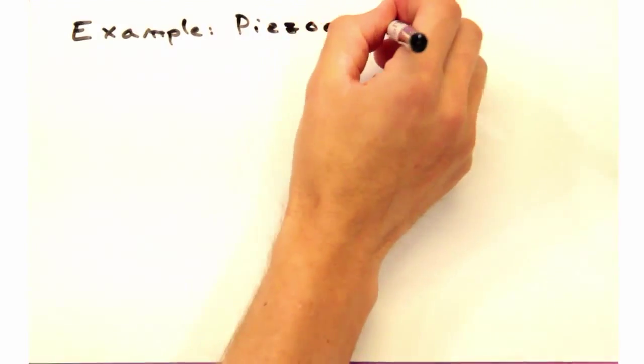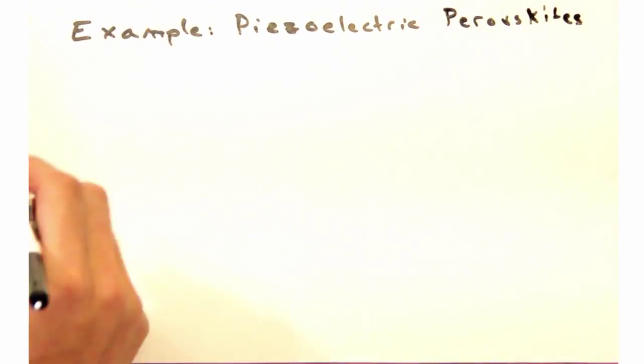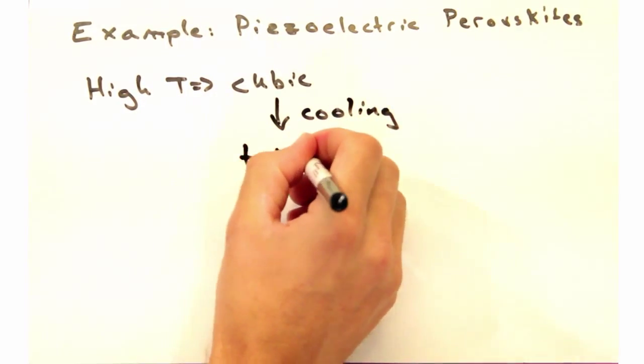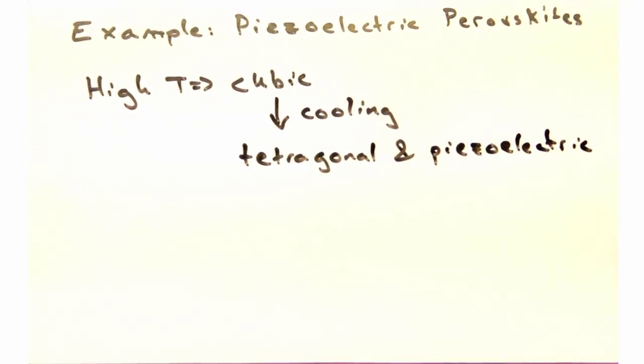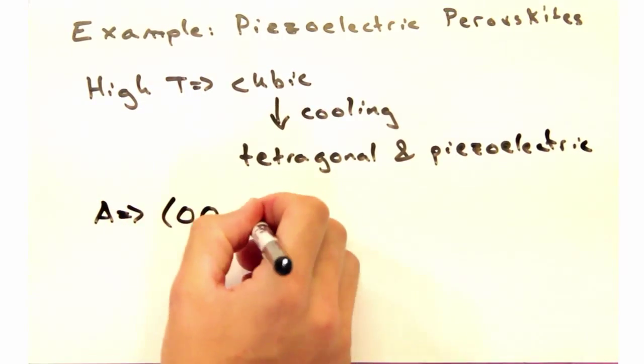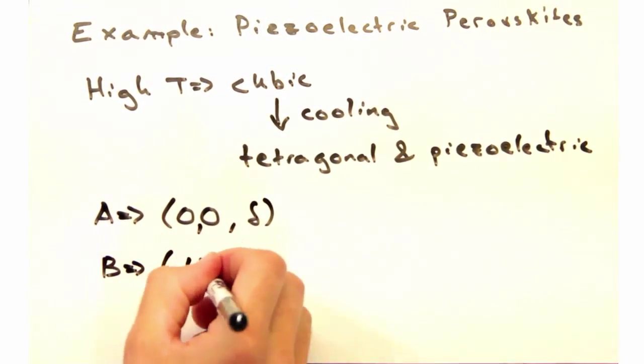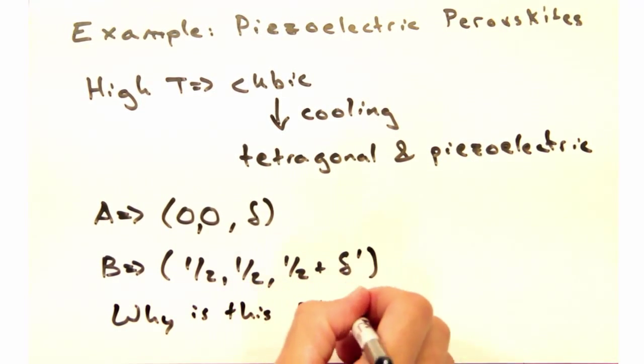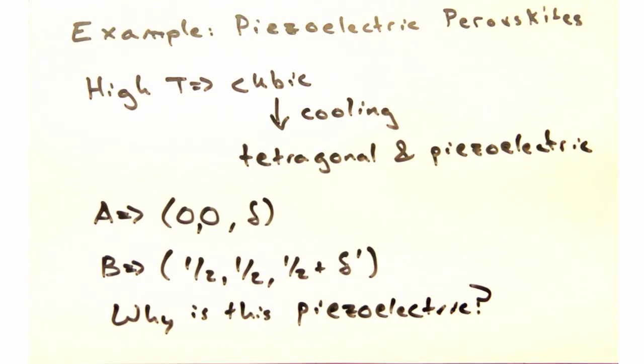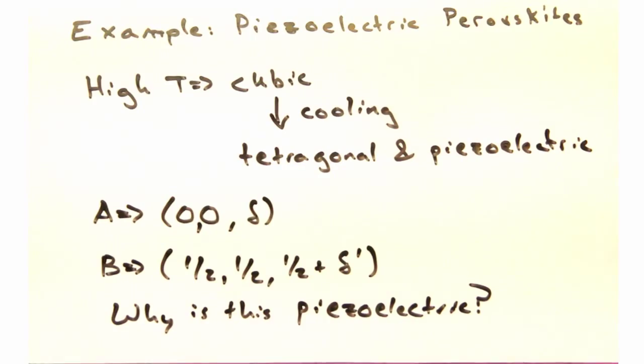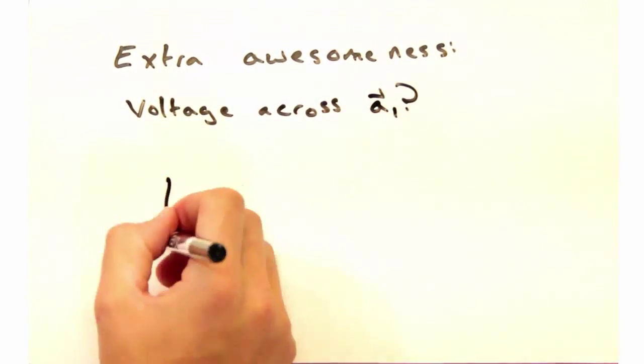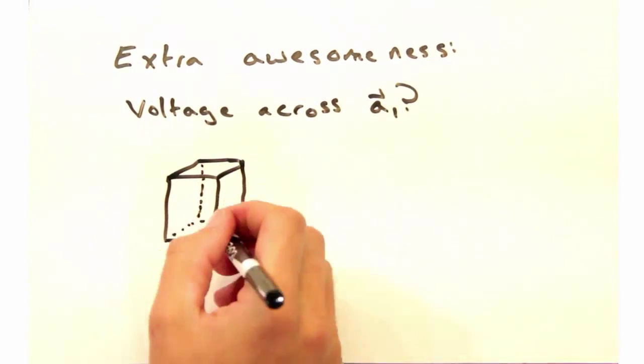So let's wrap this up with an example for you to try on your own. The first example brings us back to the perovskites. Some perovskites are tetragonal instead of cubic with a long A3 axis and exhibit piezoelectricity. When piezoelectric, the A and B cations are displaced along the A3 axis by delta and delta prime. Why don't you draw this in slices and rationalize why the macroscopic crystal is a piezoelectric material. And for some extra awesome practice, what do you think would happen if we put a voltage across A1?